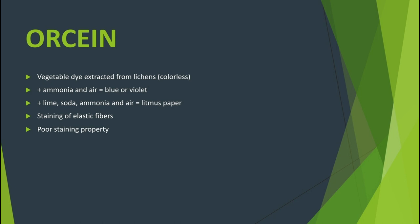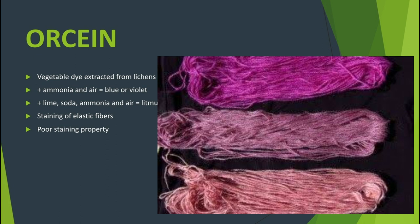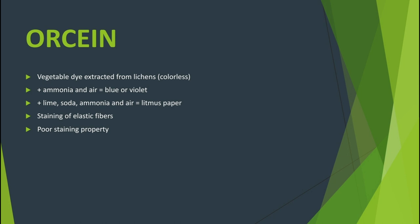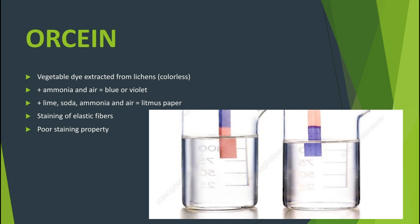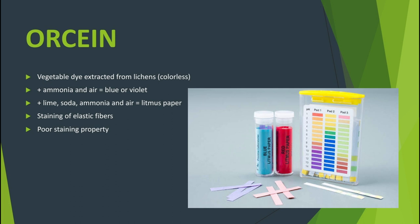We also have orsein. This is a vegetable dye extracted from certain lichens — a form of fungus or algae — which are normally colorless, but when treated with ammonia and exposed to air, can produce blue or violet colors. It is a weak acid and is soluble in alkali, and is mainly used for staining elastic fibers. Litmus, or litmus paper, is also obtained from lichens that are treated with lime and soda and exposed to ammonia and air. It is, however, not used as a cytological stain because of its poor staining property; it is instead used mainly as an indicator — a pH indicator. Litmus paper turns red if the solution is acidic, while it turns blue in an alkaline or basic medium.